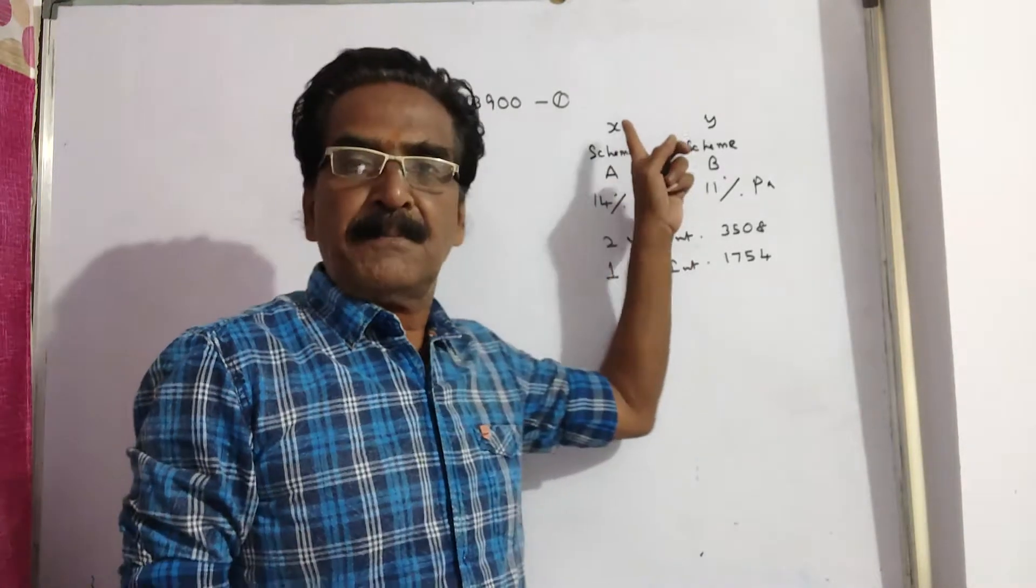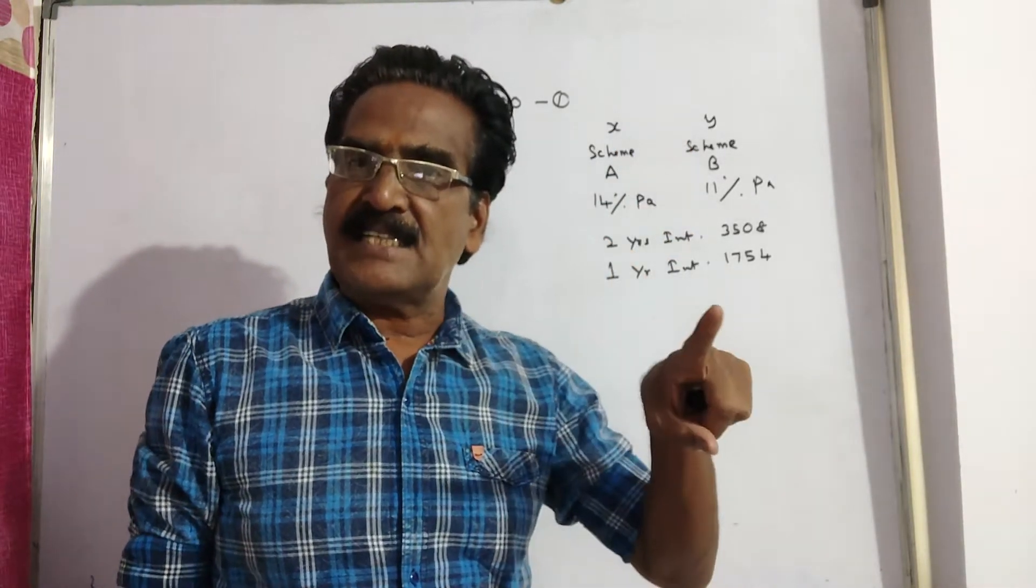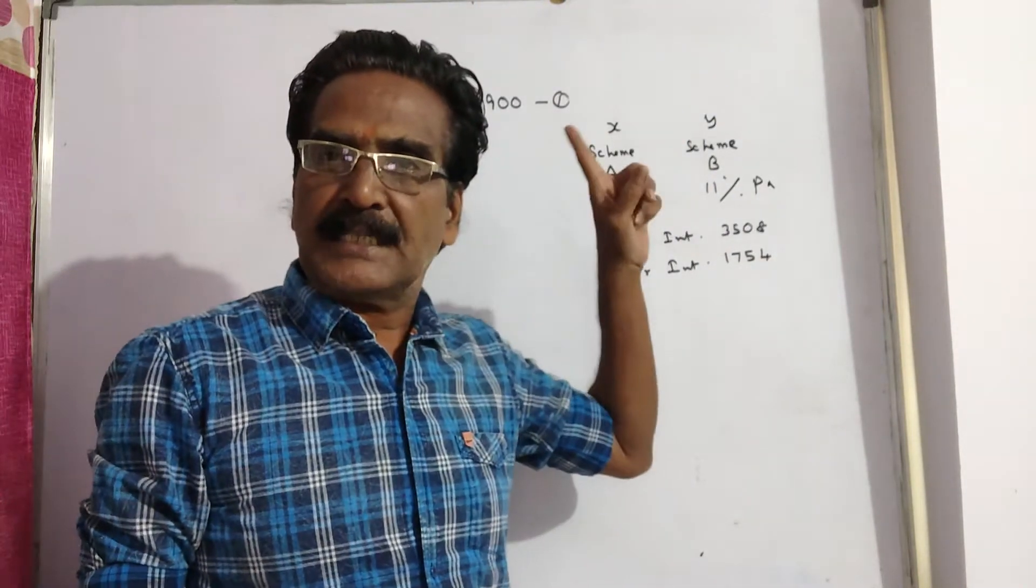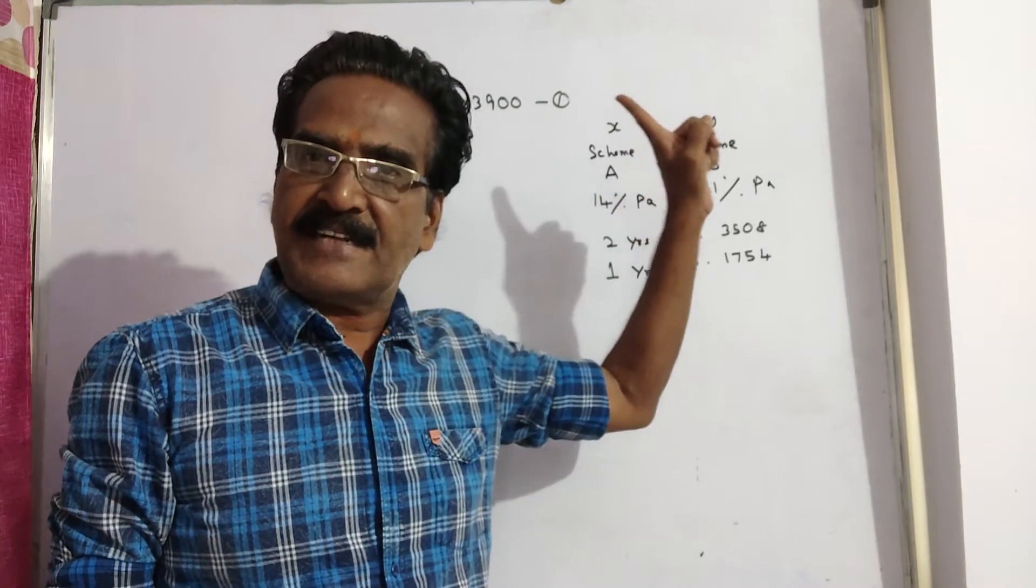X is the sum invested in scheme A and Y is the sum invested in scheme B. Then X plus Y is equal to 13,900. Say this is equation 1.